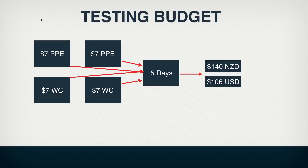You need to have a budget set in mind for your testing. This is just for testing, and then you have more budgets after that. What I do is I'll set up maybe four, five, or six ad campaigns. For this example, I'll set up seven-dollar PPE ads — that's pay-per-engagement — and then a seven-dollar website conversions campaign, which optimizes off sales, which is why you have a pixel on your website. For this example, I have four adverts at seven dollars, and I run them for five days, with a budget of $140 New Zealand dollars, which is about $106 US.